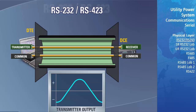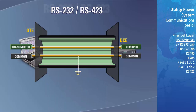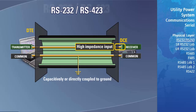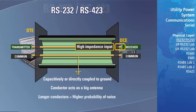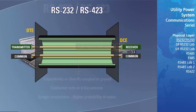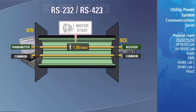RS-232 is susceptible to noise at higher baud rates. The signal common tends to be capacitively or directly coupled to ground, while the receive wire is connected to the receiver high impedance input. This conductor acts as a big antenna. The longer the conductor, the higher the probability that electromagnetic lines of radiation from sources such as a motor start can induce a voltage on this wire, superimposing a voltage that changes a logic 1 voltage level to a logic 0 level or vice versa.